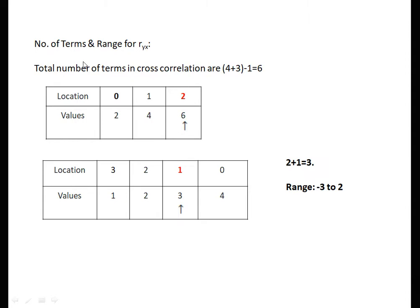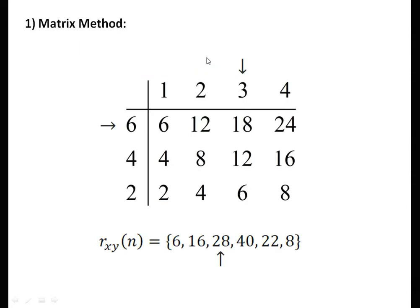This video solves only for R_xy, but you can easily calculate R_yx also. First is the matrix method. We take x = {1, 2, 3, 4} in forward direction, and the second signal y = {2, 4, 6} written in reverse as {6, 4, 2}. We do the multiplication and take values in a diagonal fashion. Therefore R_xy equals {6, 16, 28, 40, 22, 8}.